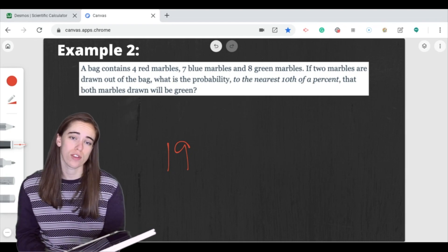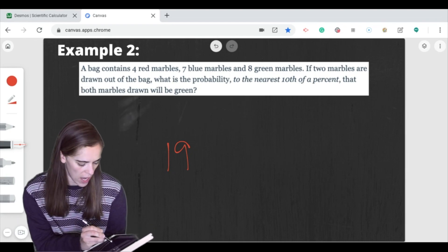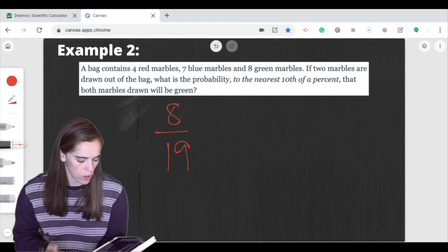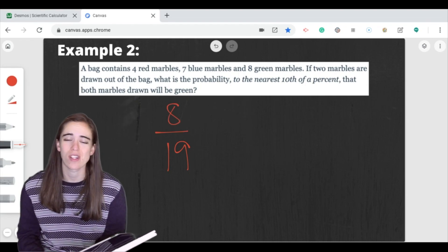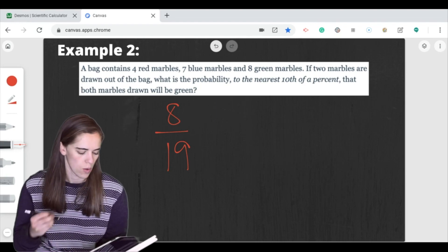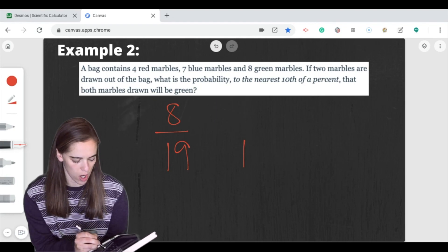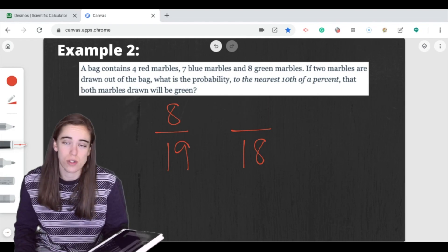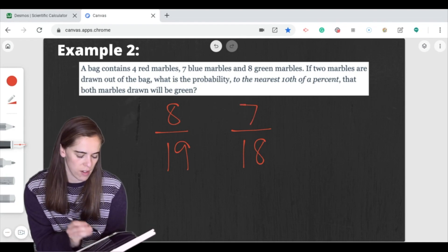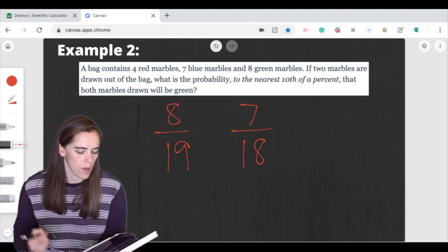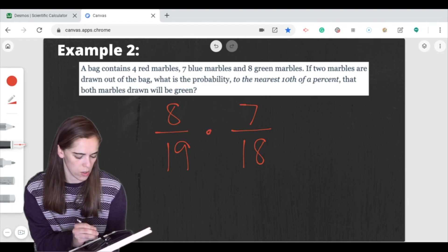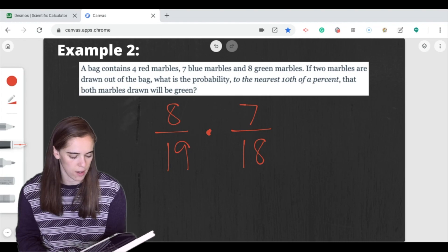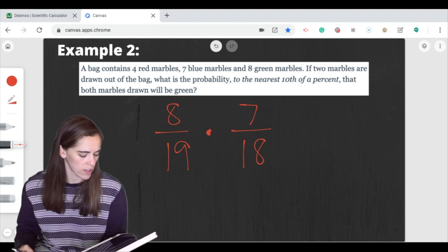I want to know the probability that both of them are green. Well, here I have 8 of them are green. So my first probability for the first marble is 8 out of 19. When I go to draw the second one, if I've already drawn one marble, there's only 18 left. And one of them that I already drew was green. So now there's only 7 of them left. I want to know the probability that this is happening for both of them. So we're going to multiply those together. So again, let's head on over to that calculator.